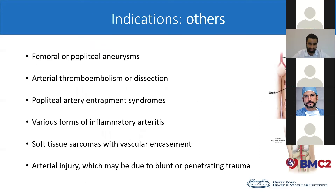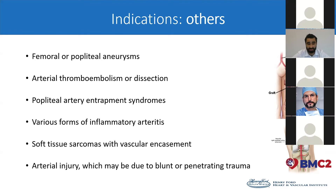Other indications include femoral or popliteal aneurysms, as you can see in the first picture at the top. Others include arterial thromboembolism or dissection, popliteal artery entrapment syndrome, various forms of inflammatory arthritis, soft tissue sarcomas with vascular encasement, and arterial injury, which might be blunt or penetrating.